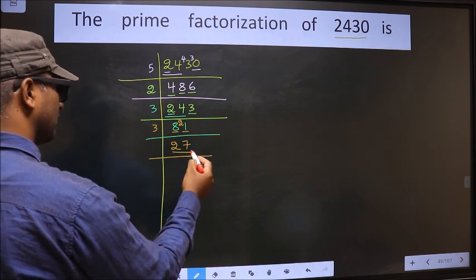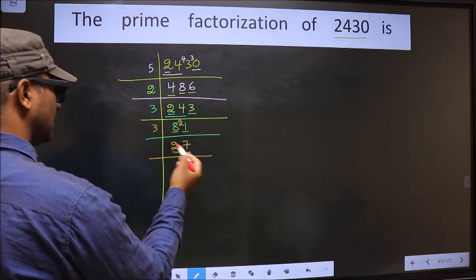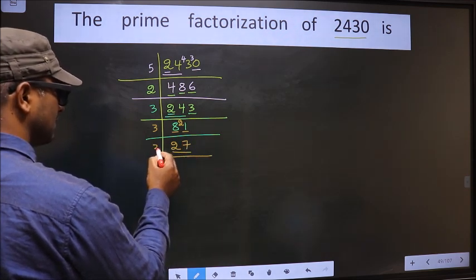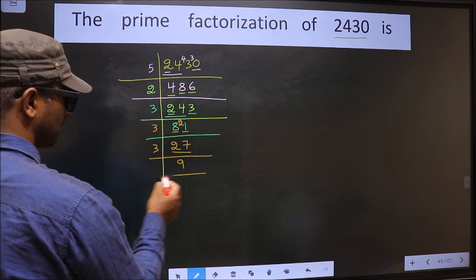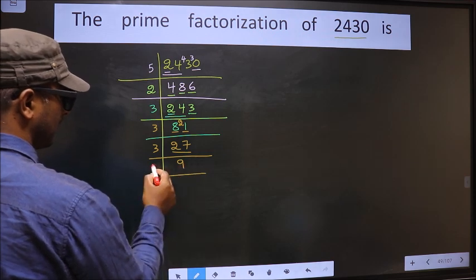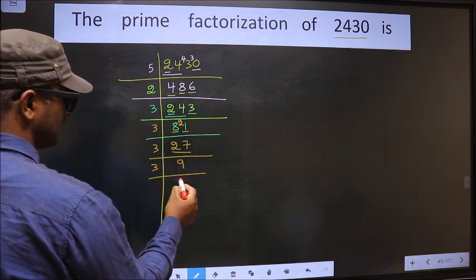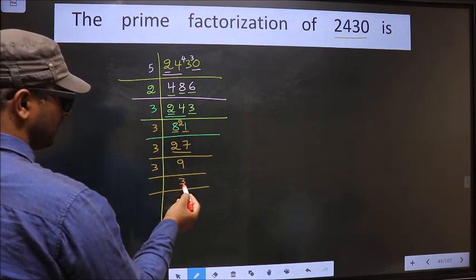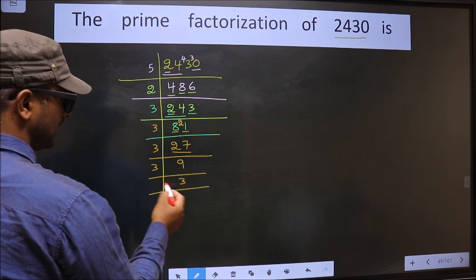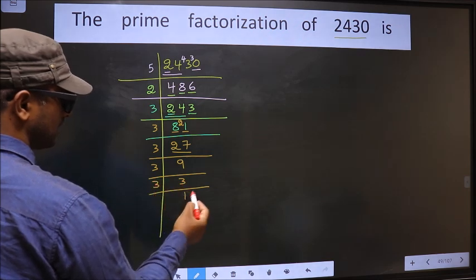Now here we have 27. 27 is 3 nines 27. 9 is 3 threes 9. Now we have 3; 3 is a prime number, so 3 ones 3.